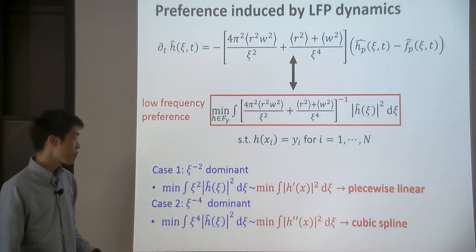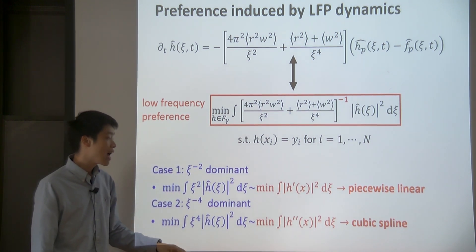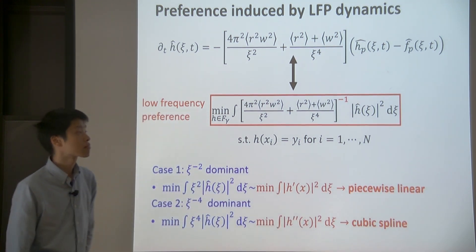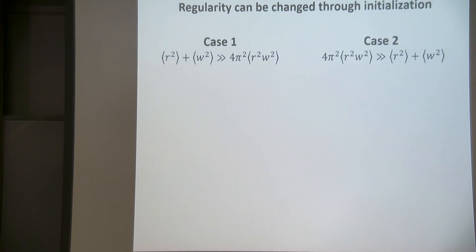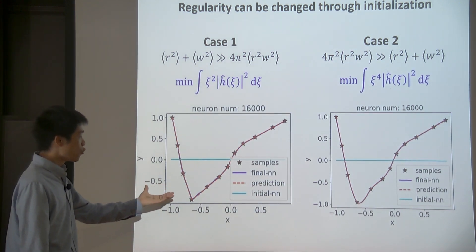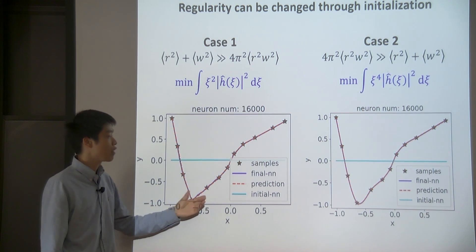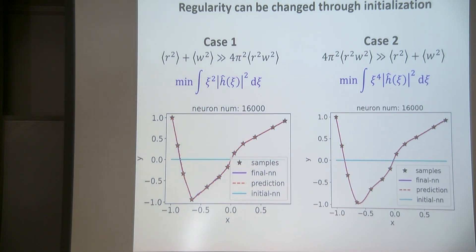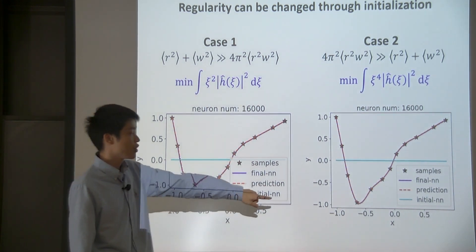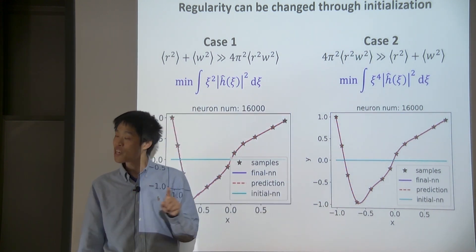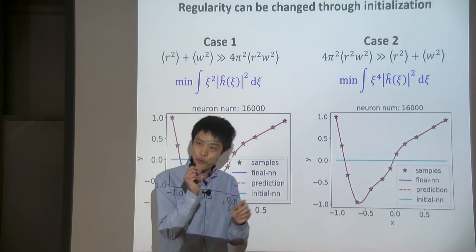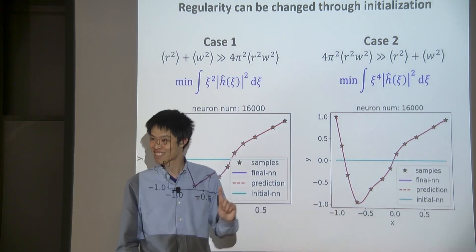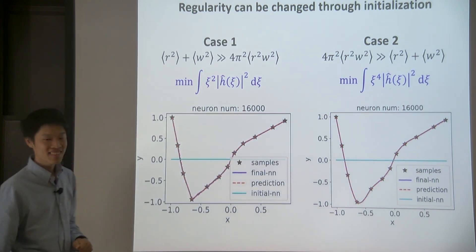which gives you a piecewise linear fitting. And if the second term dominates, then, actually, you've got a cubic spline. Let's see whether this prediction holds for the real case. Okay. In reality, we can change this kind of initial variance of these parameters. And we indeed get some piecewise linear function here. The blue curve is from a two-layer neural network of 16,000 neurons. And here, you get something of higher regularity. If you really zoom in, it's piecewise linear. But you cannot see from your eyes, because you have so many neurons.